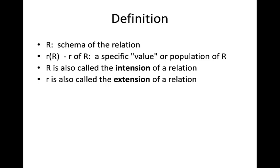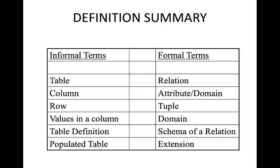Here is a definition summary. Table is the informal term — formally it is known as a relation. Column is informal — formally it is an attribute. Row is informal — formally it is a tuple. Values in a column have a domain. Table definition is formally called the schema of a relation. A populated table (filled with data) is called the extension, while the schema is also known as the intension.